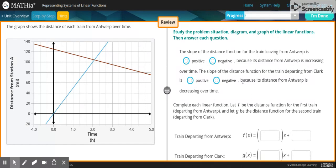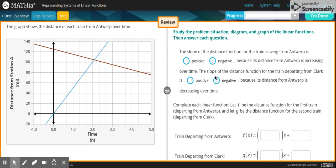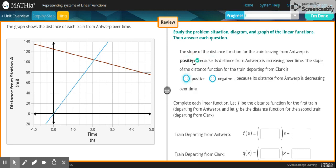So the slope of the distance function for the train leaving from Antwerp is positive or negative because its distance from Antwerp is increasing over time. So why do you leave? Because the time is increasing, that means it's going positive.